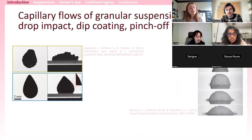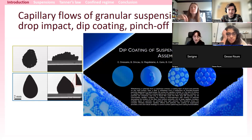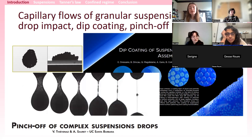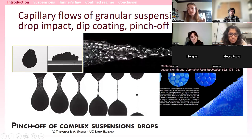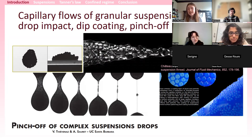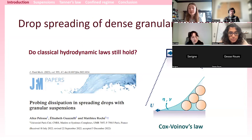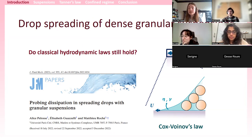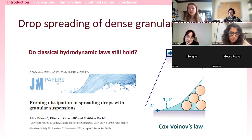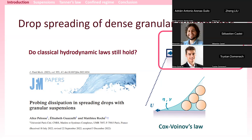We are not the first to have studied capillary flows of granular suspensions. Some people have studied impact of drops, dip coating, pinch-off of a liquid drop, and pinch-off of a liquid thread — all cases where particles get confined. Yet in the literature, some canonical examples were missing. One of them, which I will describe today, is drop spreading on a solid substrate — a complex system because you have the motion of a contact line, which is itself a very complex object.